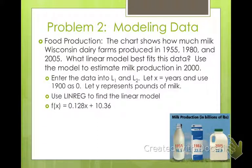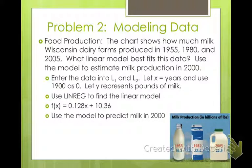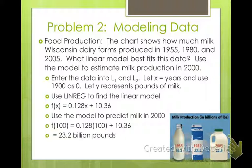We want to find what the production of milk was in the year 2000. If our linear regression is the best fit for this data, we just plug in the year 2000. From 1900 to 2000, that's 100 years. So for f(x), we plug in 100: 0.128 times 100 plus 10.36. When you do that math, you get about 23.2 billion pounds of milk that should have been made in 2000 if our linear model holds true.